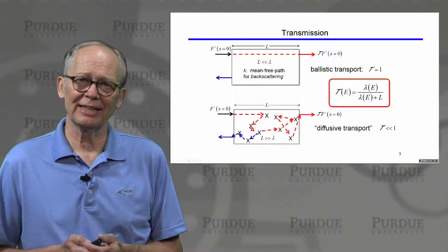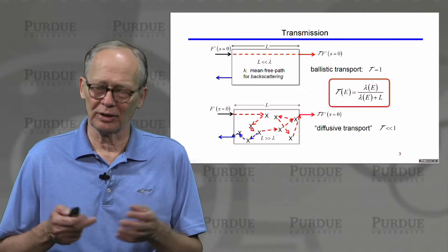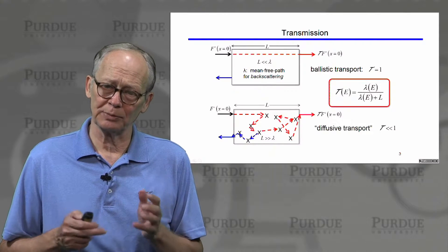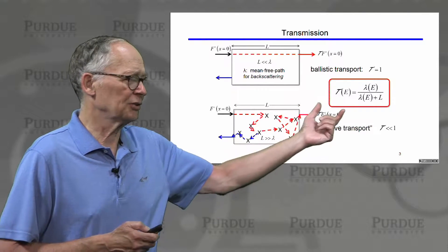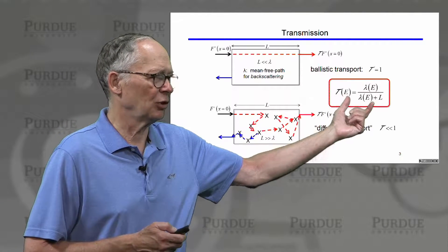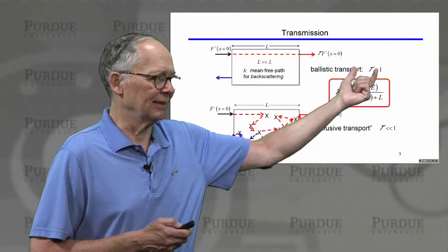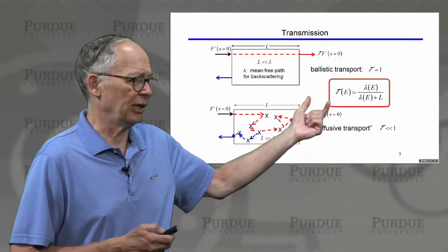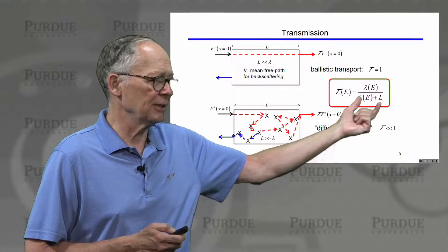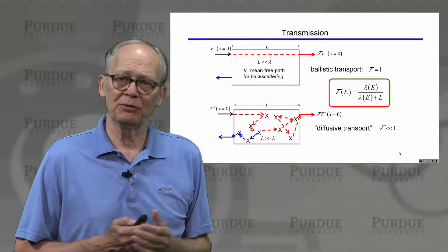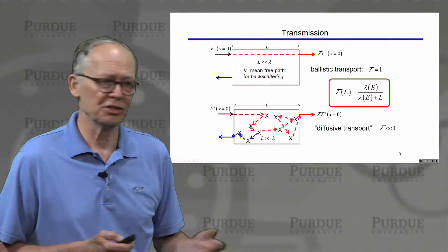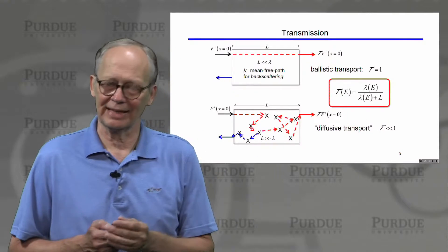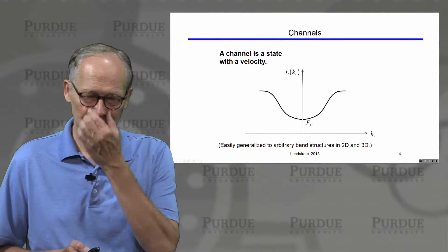We discussed the simple formula — derivable from the Boltzmann transport equation, but also the simplest formula that does the proper thing in these two limits. The transmission at any particular energy is the mean free path for carriers at that energy divided by the mean free path plus the length of the device.